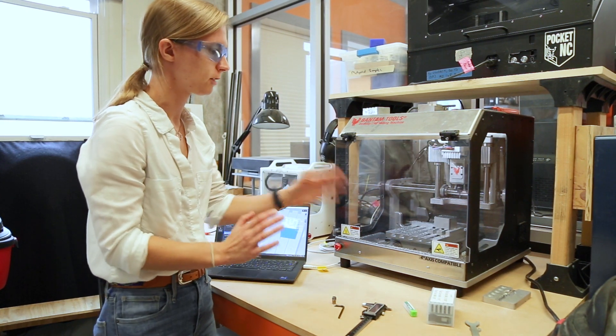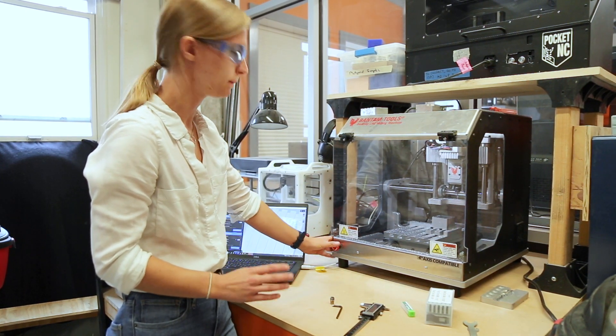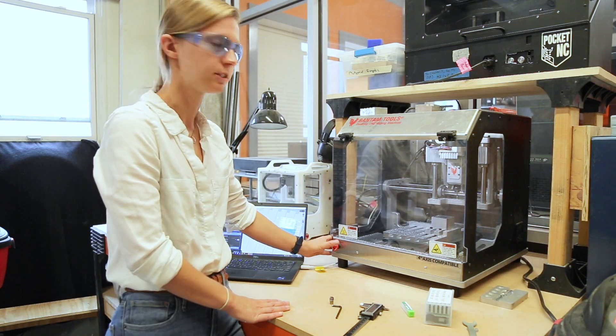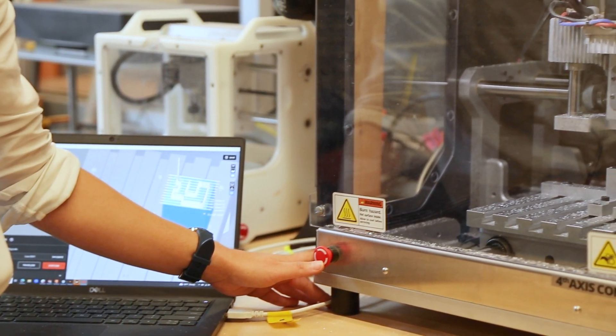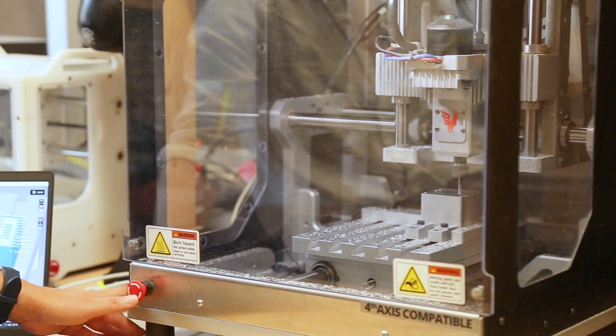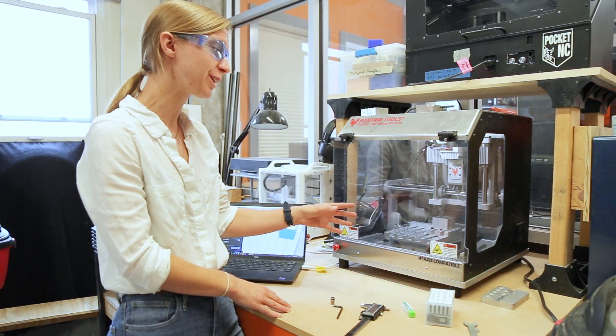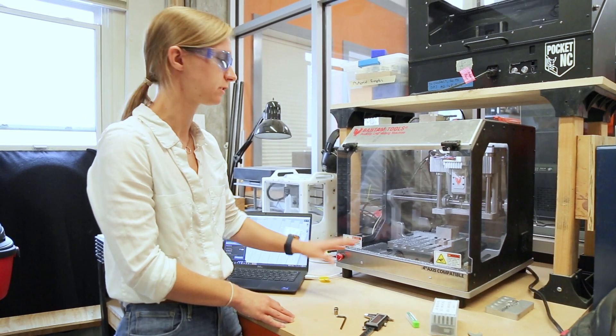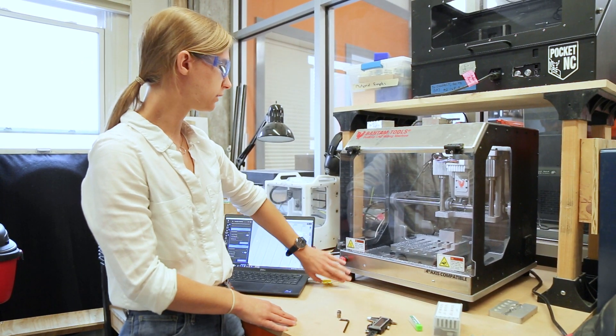One thing that's really important when we're running a job like this is you'll notice that I'm keeping my hand over the e-stop button the entire time. If there were to be an incident where maybe the block comes loose or we had programmed this tool path wrong, it's gonna make a lot of noise. You'll know very quickly that it's not doing what it should be doing, so you always want to keep your hand near the e-stop button as it's running just in case you program something wrong.